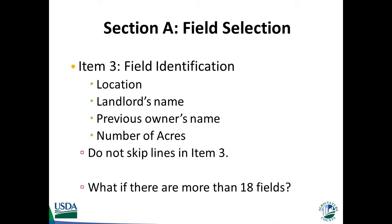Be sure to not skip any lines in Item 3. If there are more than 18 fields planted to the target crop, list only the first 18 fields closest to the operator's permanent residence. However, in Question 2, where you are asked the total number of fields, that is allowed to be more than 18.